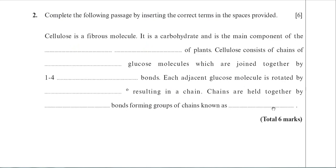Cellulose consists of chains of something glucose. They want you to put the name of the isomer of glucose. And of course, it's beta glucose for your A-level. It's only cellulose that has beta glucose in. So it's beta glucose molecules which are joined together by one four — well, it's glycosidic bonds.